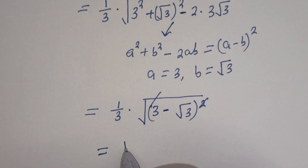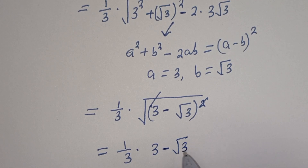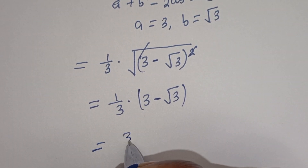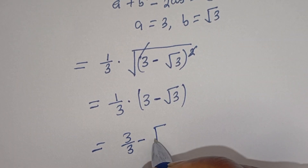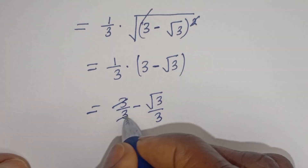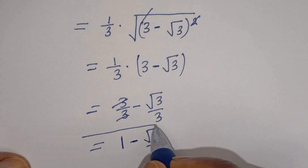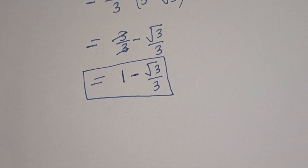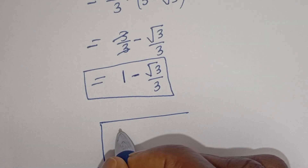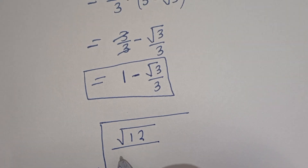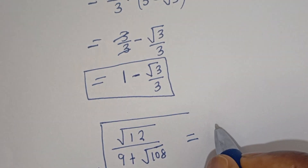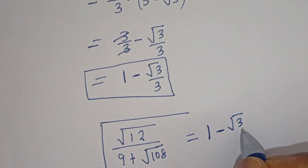Then this is equal to 1 divided by 3, multiplied by 3 minus root 3. This equals 3 divided by 3, minus square root of 3 divided by 3. The 3 divided by 3 cancels to 1, giving 1 minus square root of 3 divided by 3, and this is the final answer. Therefore, square root of square root of 12 divided by 9, plus square root of 108, is equal to 1 minus square root of 3 divided by 3.